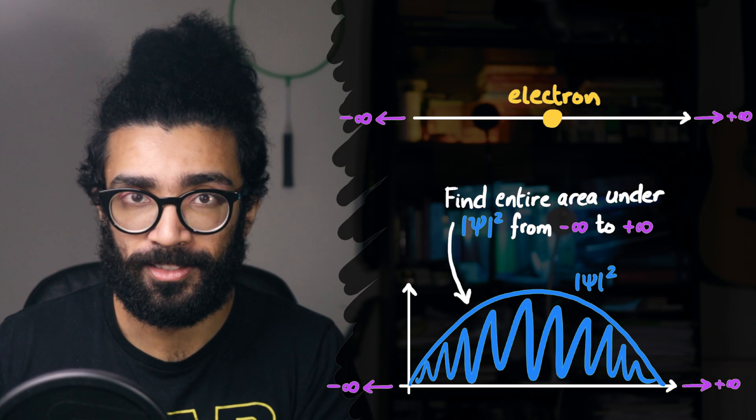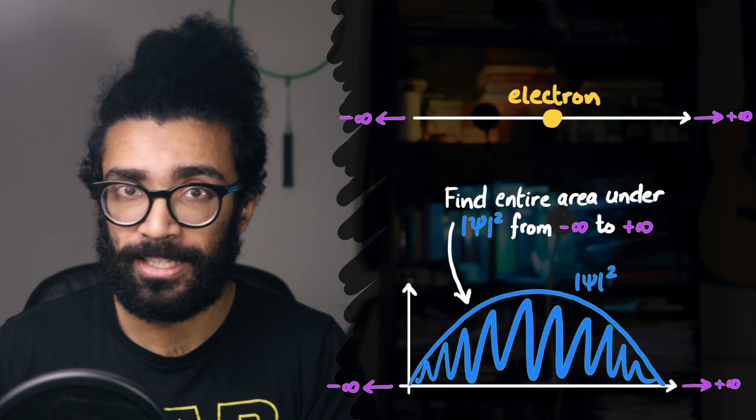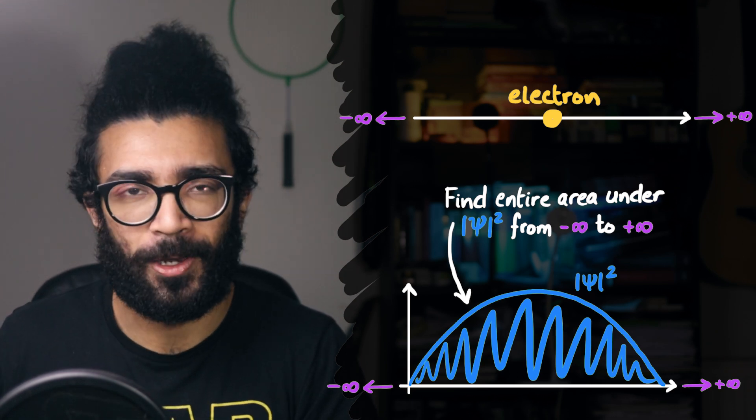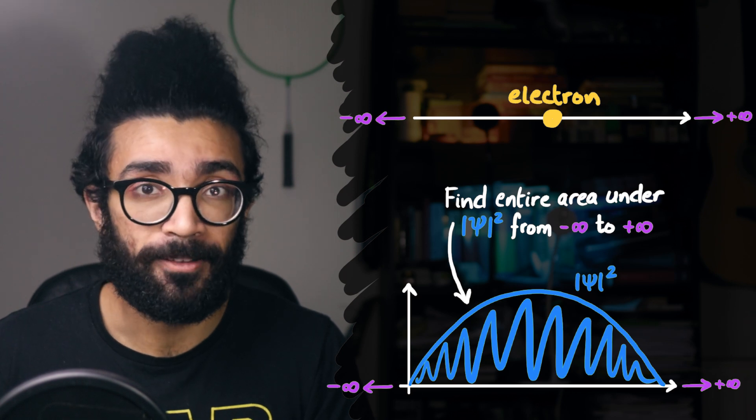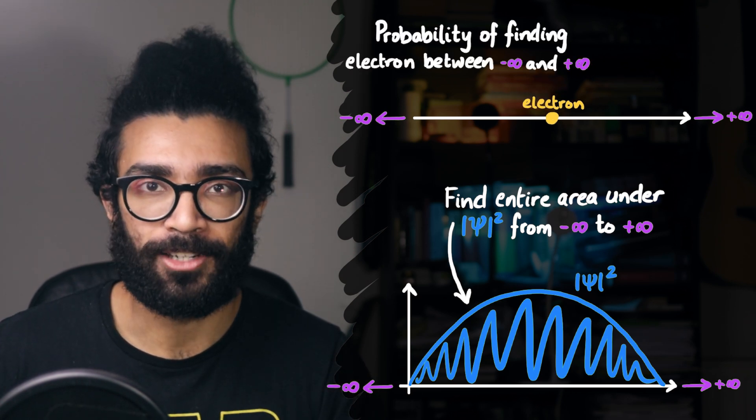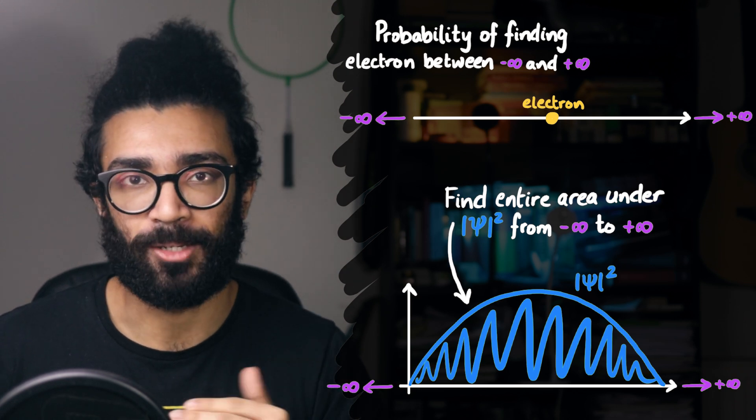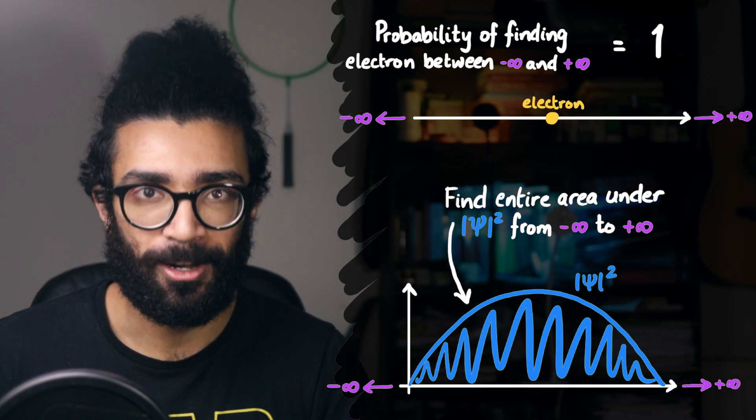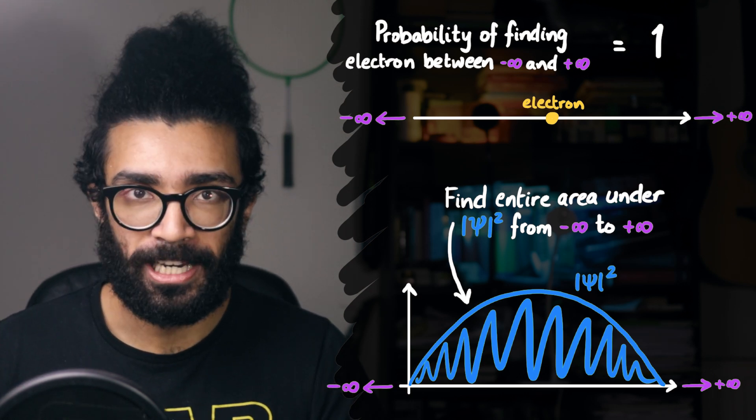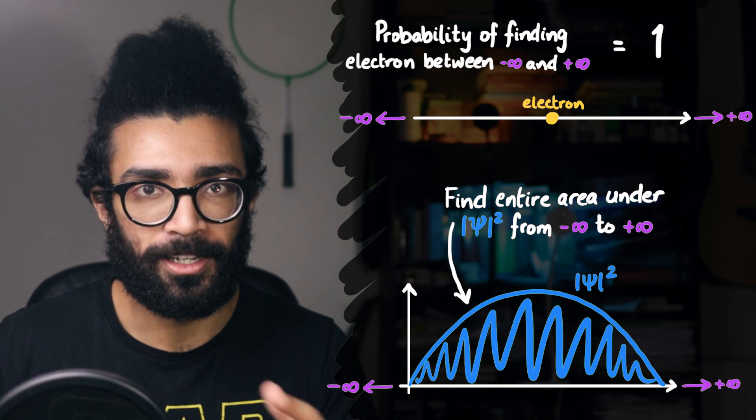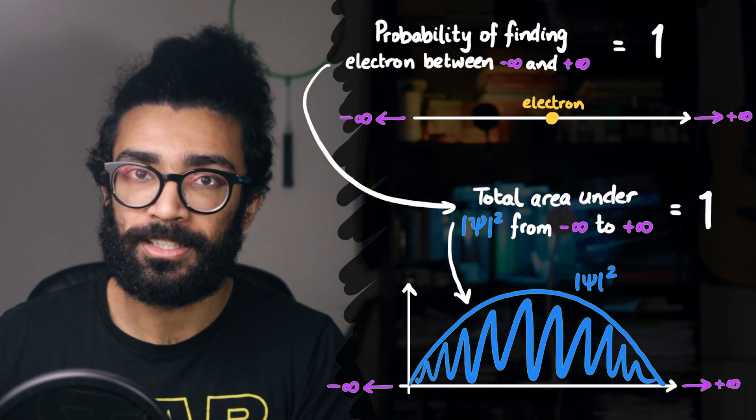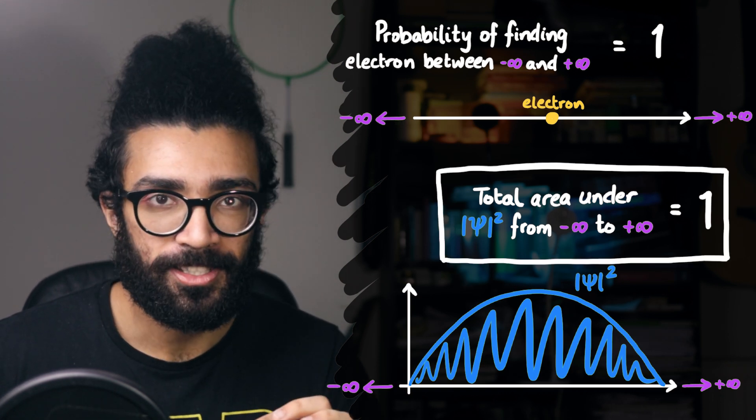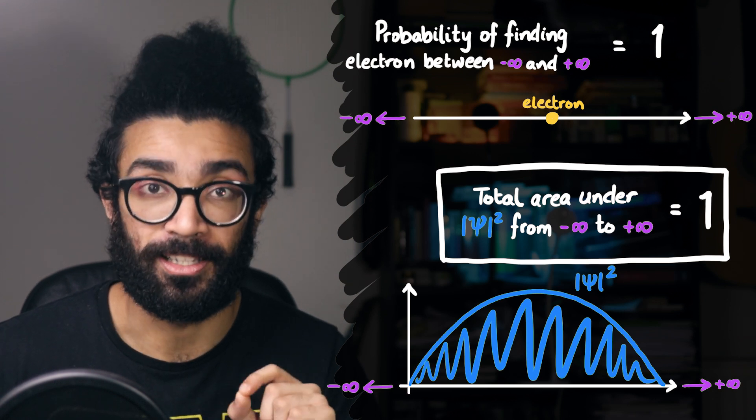We know that this electron exists. We know that it must exist along the x-axis. We've said that it has to, right? So we know that we must find it somewhere along the x-axis. It must be there. Therefore, the probability of us finding the electron somewhere along the x-axis between negative infinity and positive infinity is equal to 100%, or 1 if we want to write it that way. But then, if the probability of us finding the electron is represented by the area underneath the graph, then the total area underneath our graph must be equal to 1. So we found a new condition. And this condition sets some pretty hard limits on what our wave function can look like.